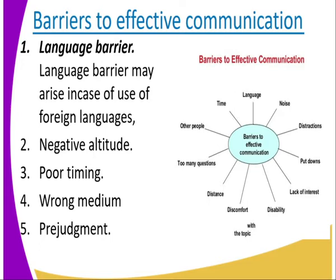The next barrier is prejudgment. When we talk about prejudgment, it is the point where we start giving judgment even before receiving the message. You have already created an answer — you already know what the person is coming to tell you. Even if there was good news, you had already decided in your mind that whatever you are receiving is bad news, so you receive the bad news and ignore the good news. These are the barriers to effective communication summarized.